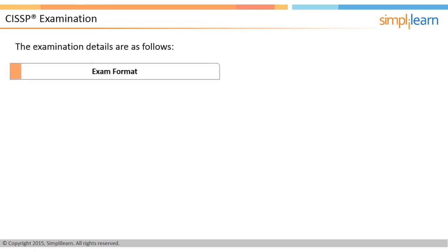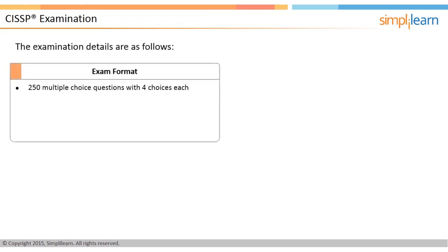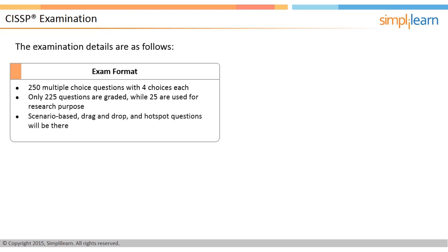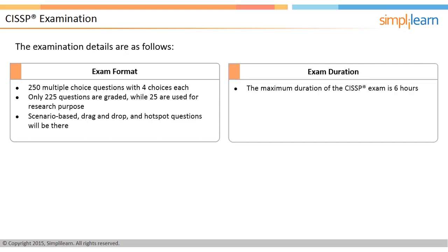The CISSP examination consists of 250 multiple-choice questions with four choices each; only 225 questions are graded while 25 are used for research purposes. There may be scenario-based questions, as well as drag-and-drop and hotspot questions. There is no penalty for incorrect answers, so candidates should not leave any questions unanswered. The maximum duration of the CISSP exam is six hours, with no lunch break during the testing period, though candidates may bring a snack.